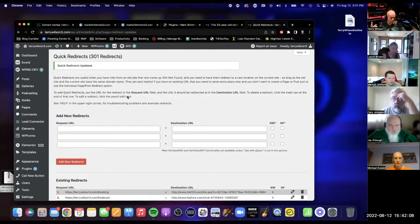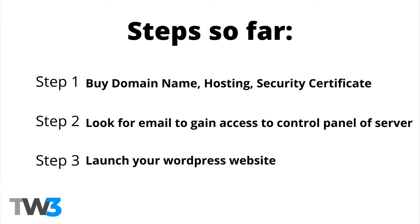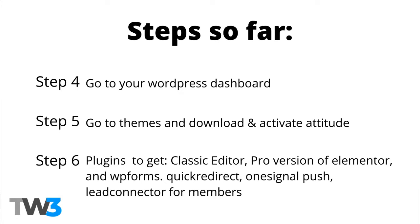Let me reiterate the steps: Step one — purchase your domain name. Step two — look for an email to get into your control panel. Step three — launch the WordPress website as I just showed you. Step four — go to your WordPress dashboard. Step five — pick the Attitude theme, then start loading plugins. The biggest plugin to jump on is the anti-spam plugin to keep spam off your blog. Then Classic Editor. If you're a member, get Lead Connector. Then send us a ticket at terrywilson3.com to get the pro versions of Elementor and WP Forms.